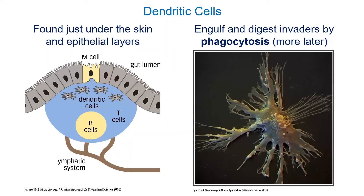The normal flora protect us by occupying niches that pathogens might occupy. They produce acids and bacteriocins — antibacterial proteins — and they help promote our immune system, which is also helpful. That's the first line of defense — a whirlwind tour — but I didn't want to focus on it too much. I want to stay on schedule since we still have more units to cover, and the adaptive immune system is a little more complex.